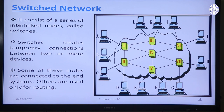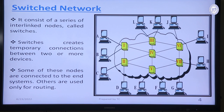What is a switch network? A switch network consists of a series of interlinked nodes called switches. Switches create a temporary connection between two or more devices. In this figure, we can see that 1, 2, 3, 4, 5, 6, 7 are switches and A, B, C, D, E, F, G, H, I, J, K, L are all end users. Some switches are directly connected with the end user — these are called edge switches. Some switches are directly connected with other switches, used only for routing purposes, and are called distributed switches.